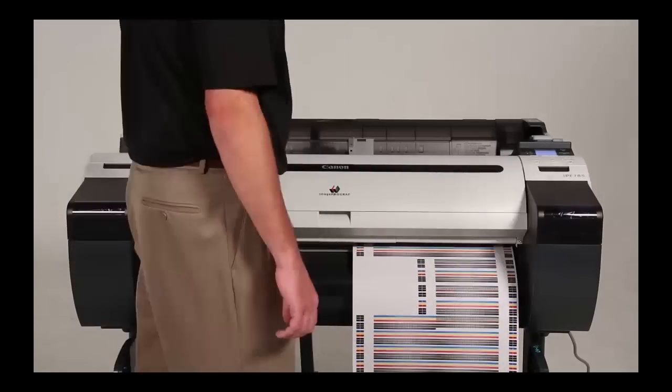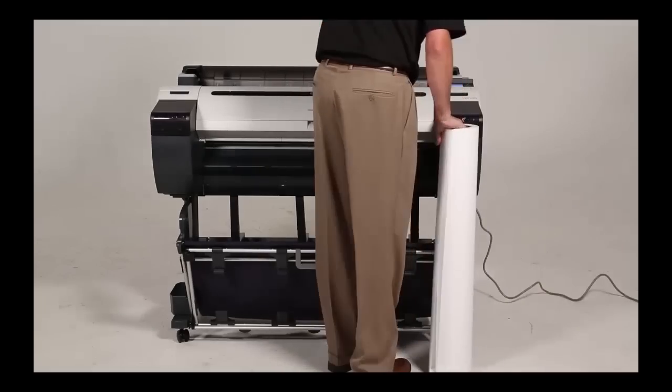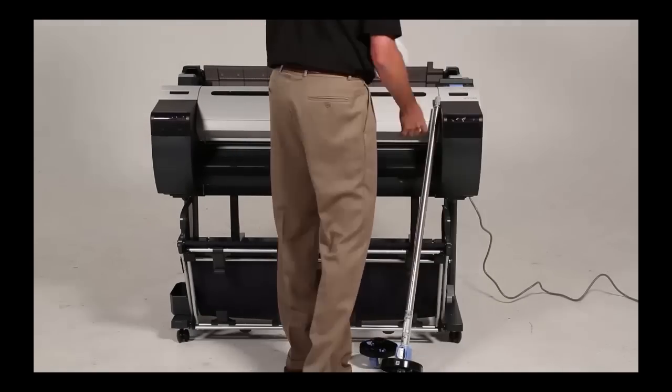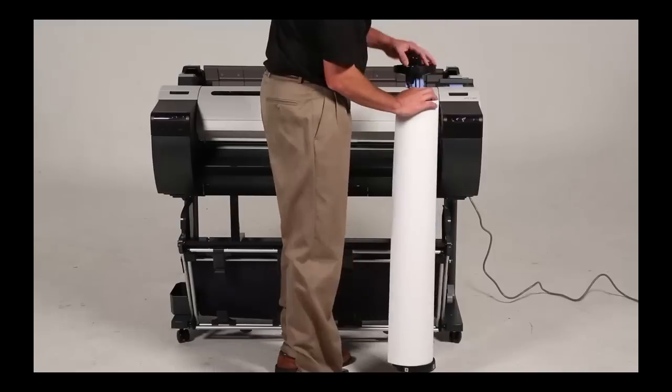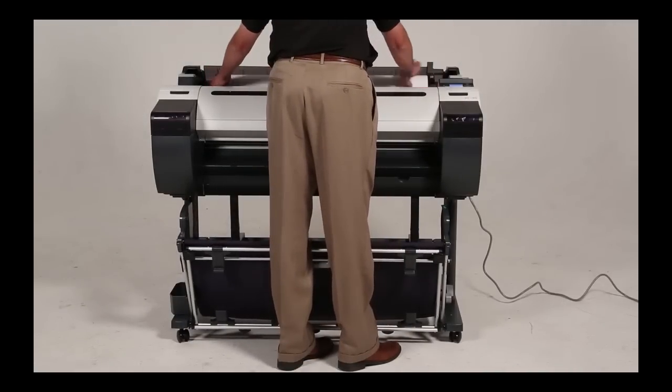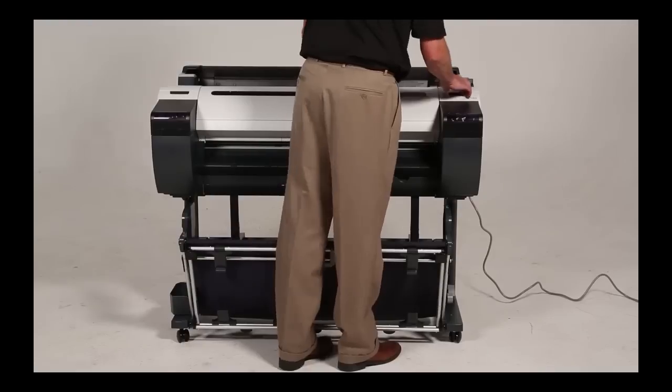When the print head adjustment page is finished, you are now ready to load your selected media. Remove the spindle and load your roll media according to the diagram. Attach the end cap and lower the blue locking lever. Feed the paper into the slot. Once the printer has loaded the media, your printer is ready.